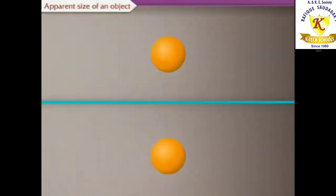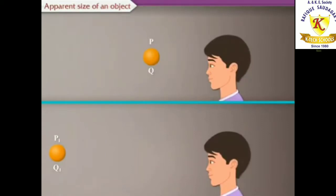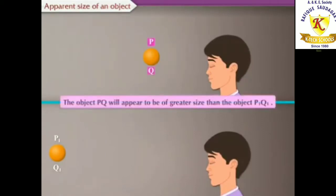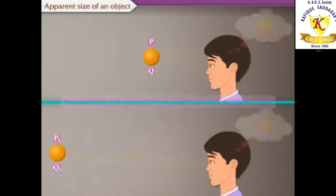Let us start with apparent size of an object. Consider two objects PQ and P1Q1 having the same size but kept at different distances from an eye. The object PQ will appear to be of greater size than the object P1Q1.